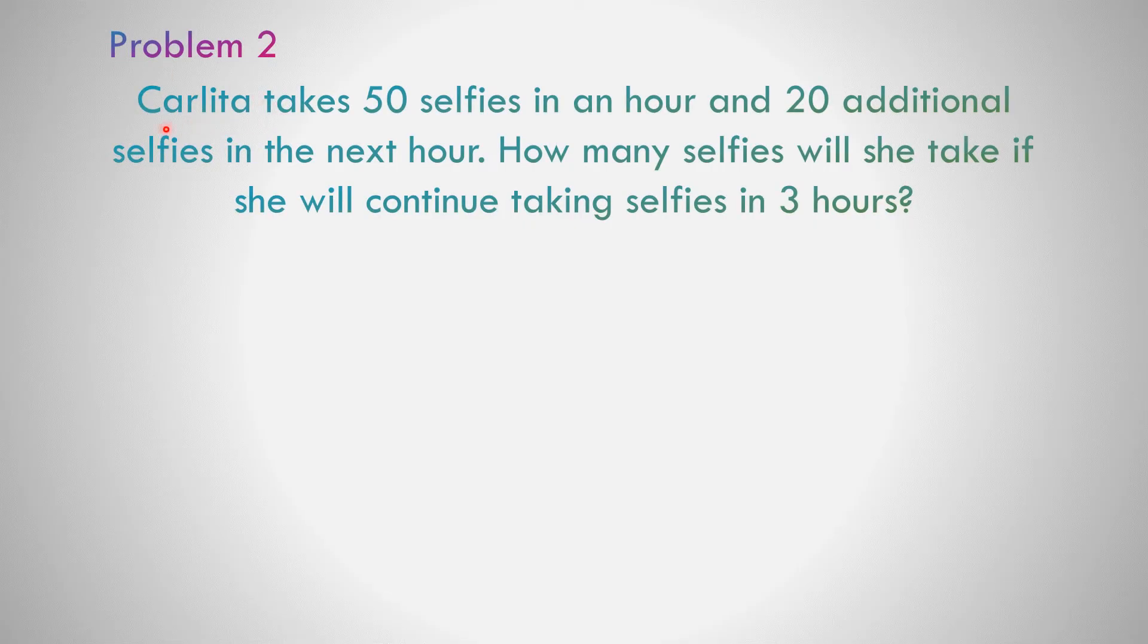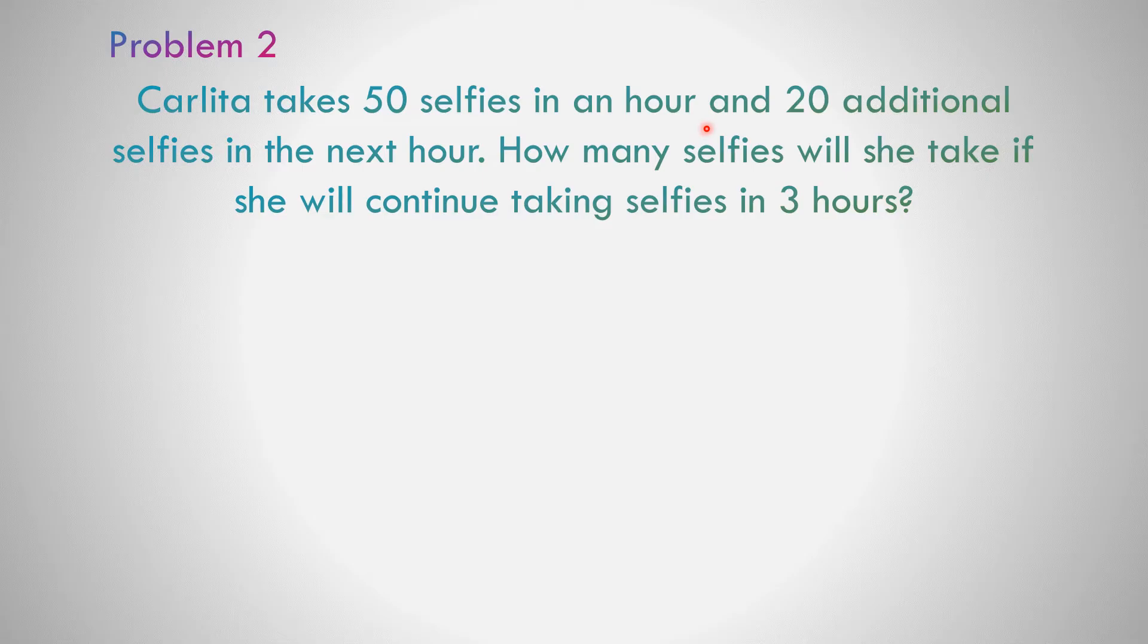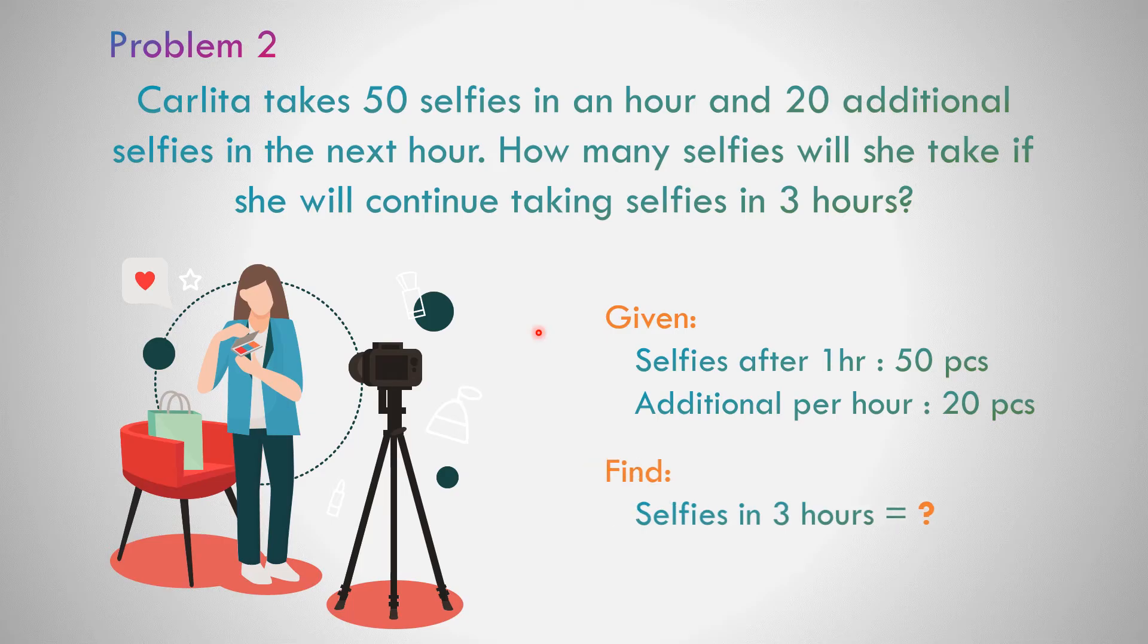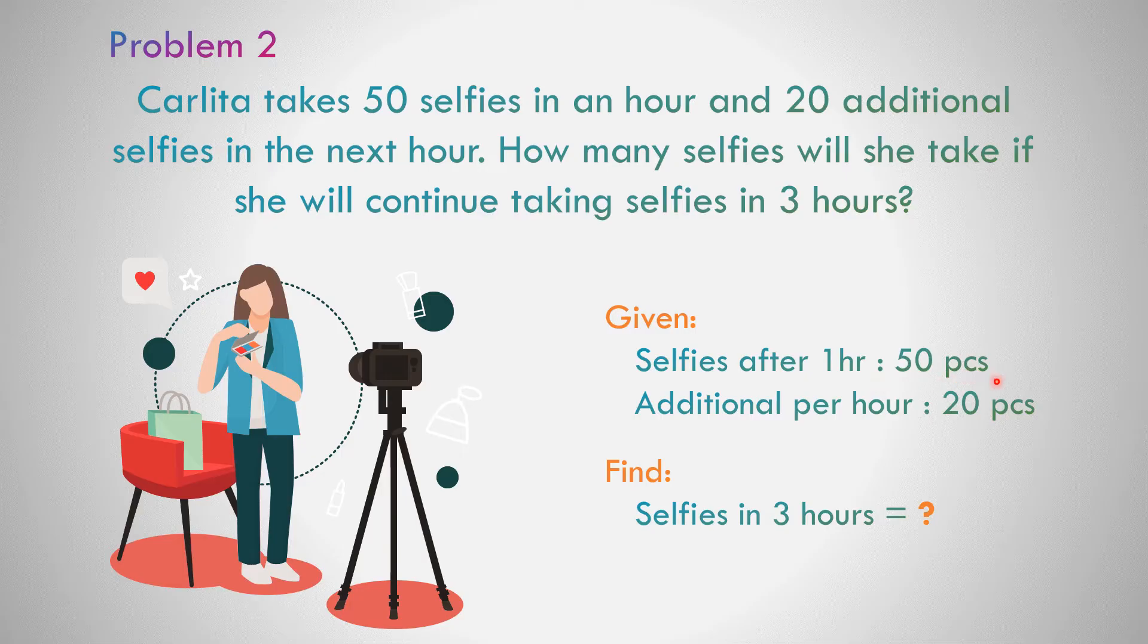Problem number two. Carlita takes 50 selfies in an hour and 20 additional selfies in the next hour. How many selfies will she take if she will continue taking selfies in three hours? She takes selfies after one hour, 50 pieces, and additional per hour is 20 pieces.